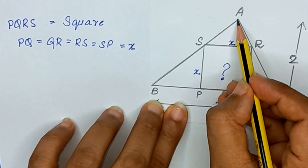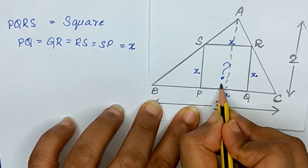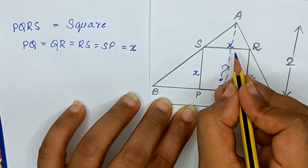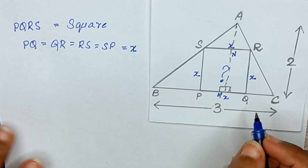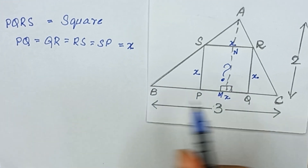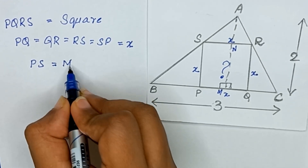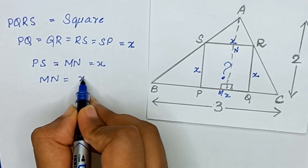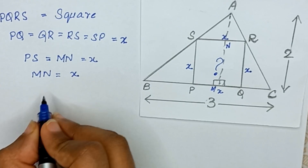Now if I draw a perpendicular from point A to BC, we get two right angles. We name the foot of the perpendicular N and the point where the square touches this perpendicular M. Since PQRS is a square, PS equals NM, so NM equals x.